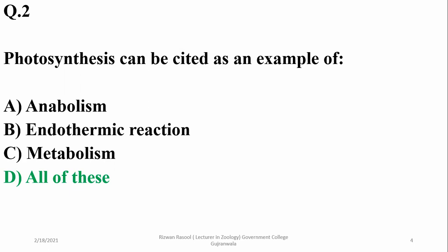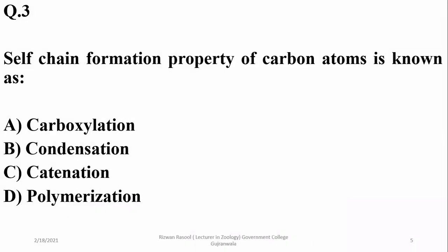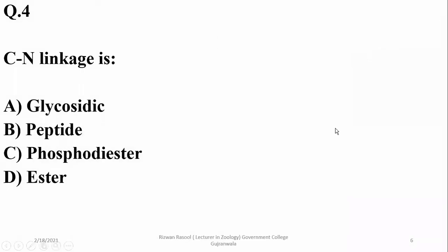And in metabolic reactions, so right option is D. Self-chain formation property of carbon atoms is known as catenation. Carbon-nitrogen linkage is termed as peptide linkage.